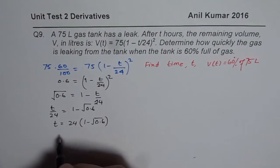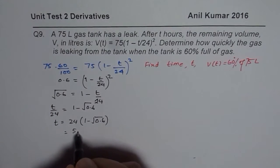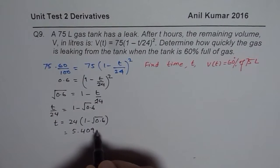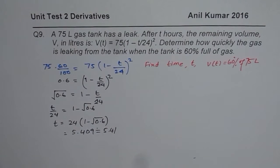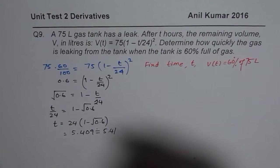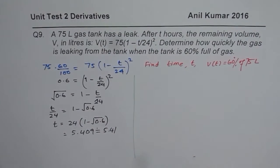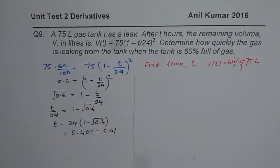Bracket close equals to 5.409. So that is the time when we have 60% of gas in the tank. So this is the first part of the equation.